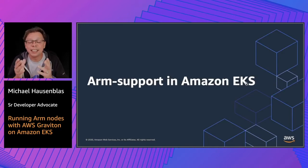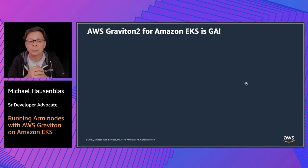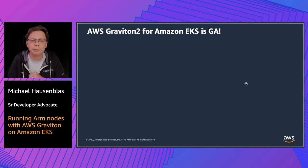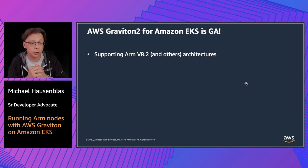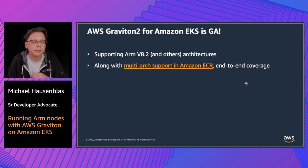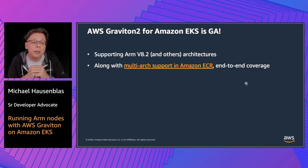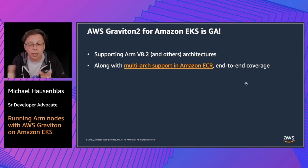Let's have a look at the ARM support in Amazon EKS. ARM, in our case, specifically means AWS Graviton2. Today we announced that we indeed have GA — General Availability — for Graviton2 in EKS. That means we're supporting ARMv8.2 and other architectures now in GA. And with the multi-architecture support in Amazon ECR, we now have end-to-end coverage across the entire build and deploy cycle.